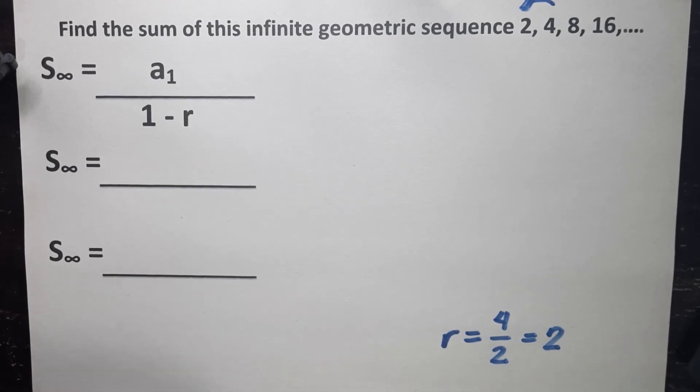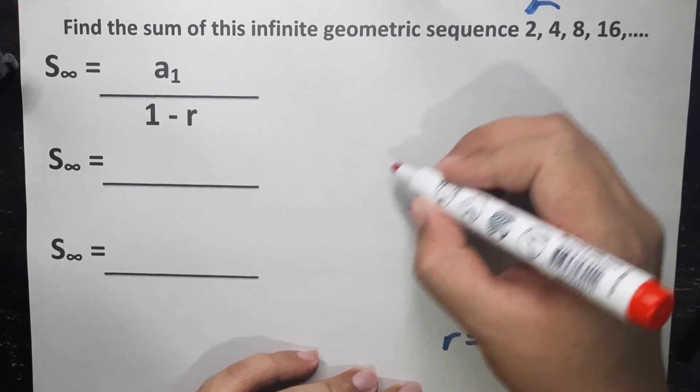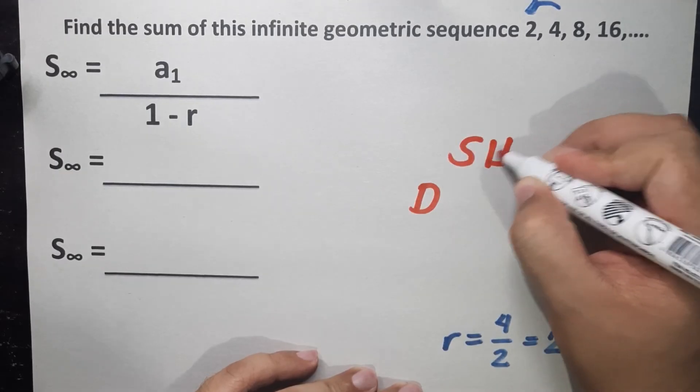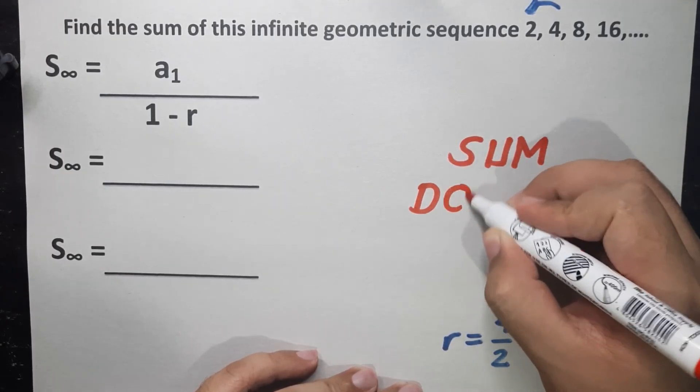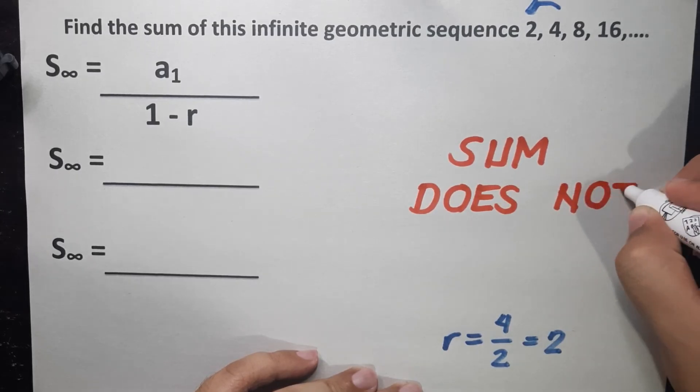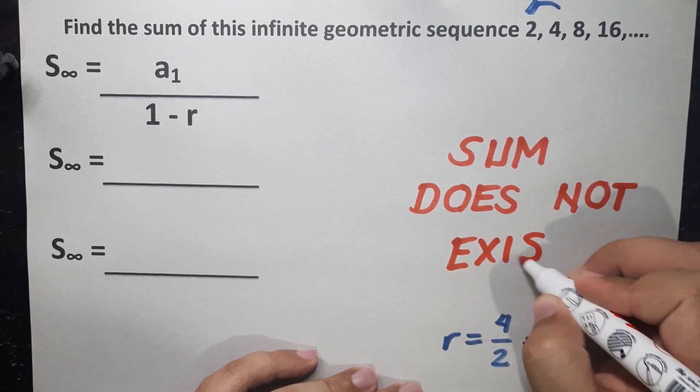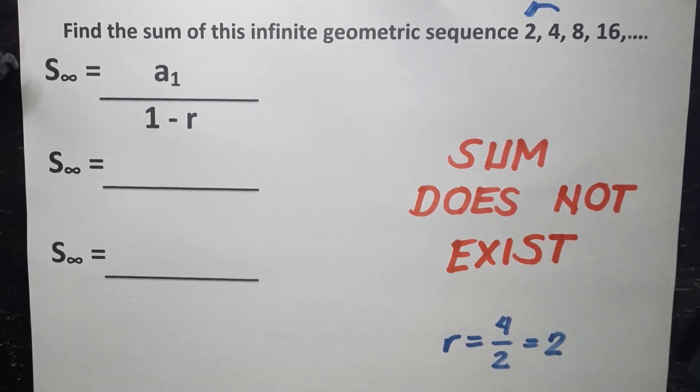Just simply answer, sum does not exist. Because again, the common ratio is greater than positive 1. So sum does not exist is your final answer. But why does it not exist? Let's try solving.